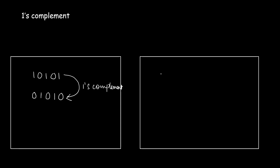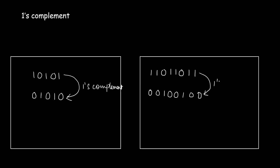Let me take another example. I'll take the number 11011011 and find its one's complement. 1 changes to 0, 1 changes to 0, 0 changes to 1, 1 changes to 0, 1 changes to 0, 0 changes to 1, 1 changes to 0, and 1 changes to 0. This is how you represent the one's complement of a given number.